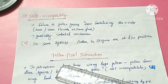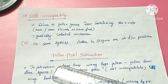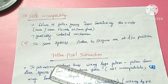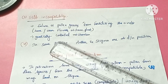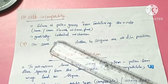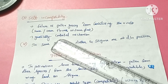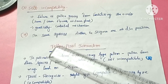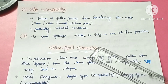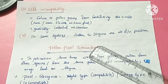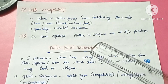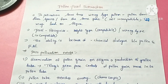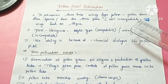Self-incompatibility is a genetically controlled method. When self-pollination occurs in the same plant or same flower, the pollen grain in the pistil will inhibit pollen tube growth — that condition is called self-incompatibility. Another device involves anther and stigma being positioned at different places, preventing self-pollination.